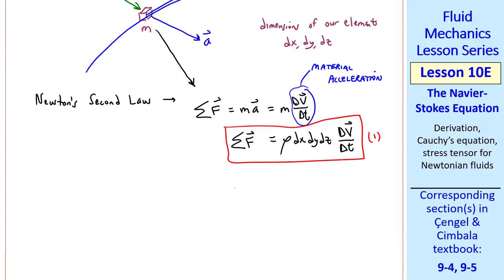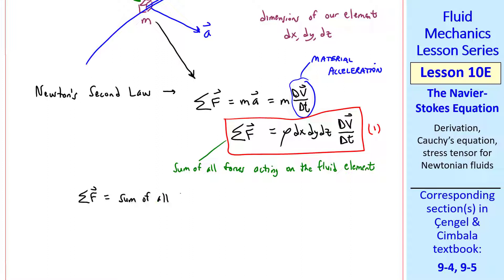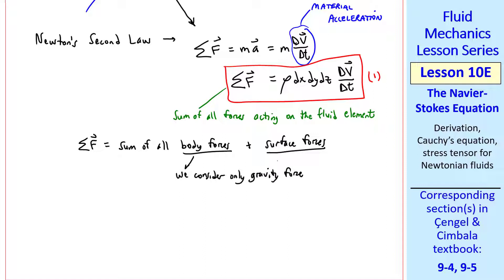Well, what is sigma f? It's the sum of all forces acting on the fluid element. As we did previously with control volumes, sigma f is the sum of all body forces plus surface forces. Body forces are simple, since we'll consider only the gravity force. Let's consider our little fluid element of dimensions dx, dy, and dz, and we'll typically let vector g act in the minus z direction. So the body force on our little fluid element is just the weight of the fluid element, which is rho g times the volume dx, dy, dz.